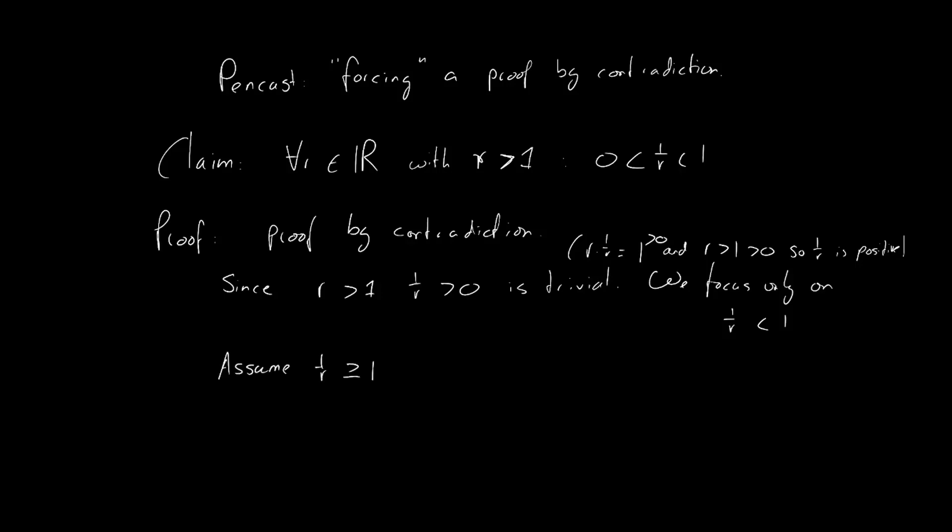Now, this is the part where our proof by contradiction begins. Like in any proof by contradiction, we assume the opposite of what we want to prove. In this case, we assume that 1 over r is larger than or equal to 1.